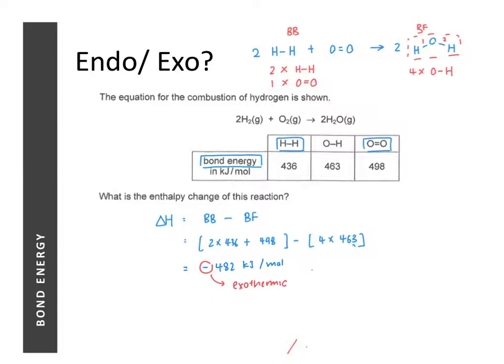One way to remember the formula ΔH = BB − BF is that it is in alphabetical order: B comes before F, so bonds broken minus bonds formed. Also, the minus sign in the formula already accounts for the fact that energy is given out during bond forming, so there is no need to add a minus sign to any bond energy values — just use them as given. The minus sign already accounts for the fact that the energy change involved in bond forming is negative.